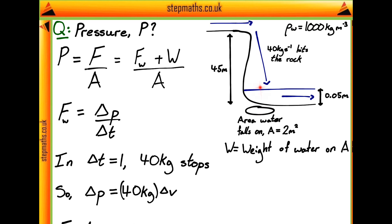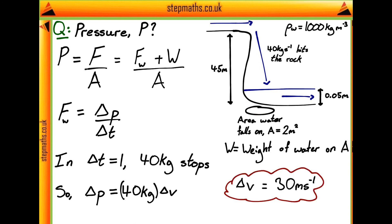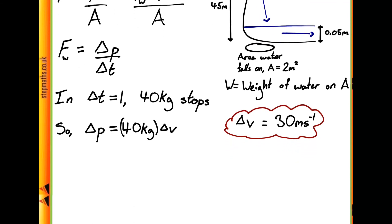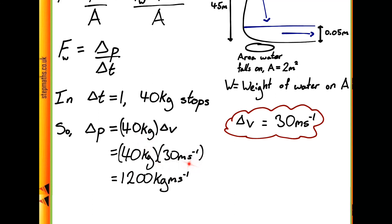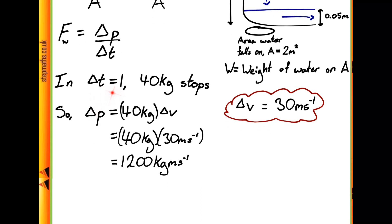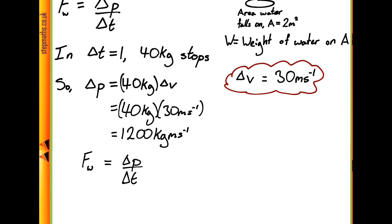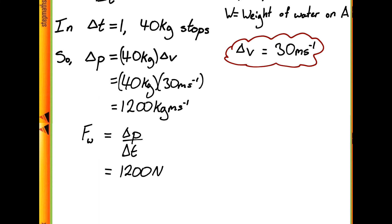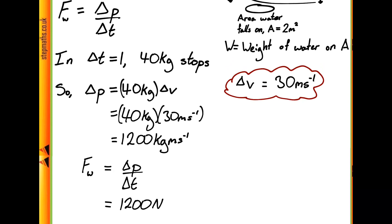Since the water comes to rest when it hits the rock at the bottom, we can go ahead and calculate delta P, which is just going to be our 40 kilograms multiplied by 30 metres per second, giving a total change of momentum of 1,200 kg·m/s. Then, dividing this by a time period of one second, we get that the force is equal to 1,200 newtons. So the force due to the falling water is 1,200 newtons, and once we find the weight of the stationary water, we can calculate our pressure.